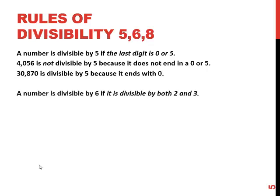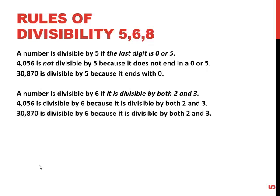Our next number is 6: a number is divisible by 6 if it is divisible by both 2 and 3. So looking at 4,056, we remember we checked it, it was divisible by 2 and we checked it and it was divisible by 3, and because it's divisible by both of those numbers it is divisible by 6. The same is true for 30,870. It is divisible by 6 because it's divisible by 2 and it is divisible by 3.